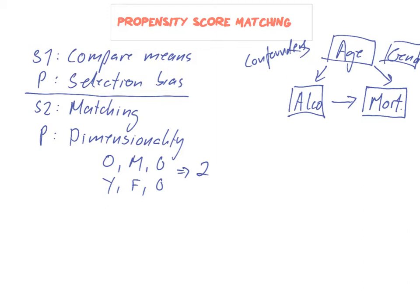If each variable has only two values, you get 2 to the power of n subgroups, where n is the number of variables. With eight variables, that's 2⁸ = 256 subgroups. Within each subgroup you need people who drink and people who don't, so you need thousands of observations. Most likely you won't have all those observations, making simple matching impractical.